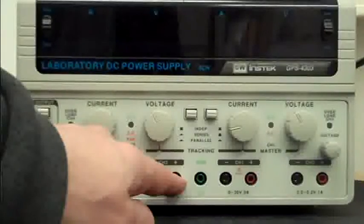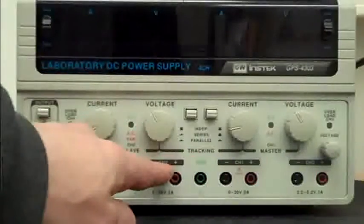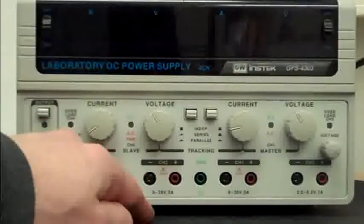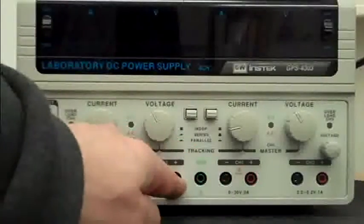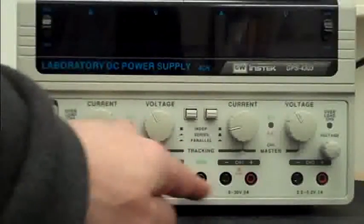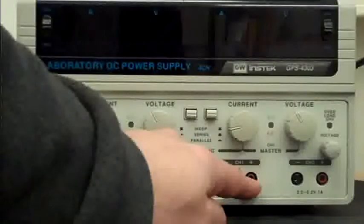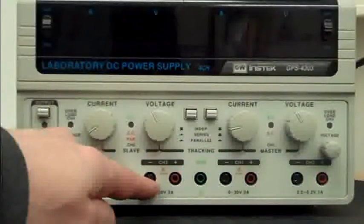So if we set the channel 1 and channel 2 voltage to 12 volts and define this point to be our ground, then that will be plus 12 volts and that will be minus 12 volts.